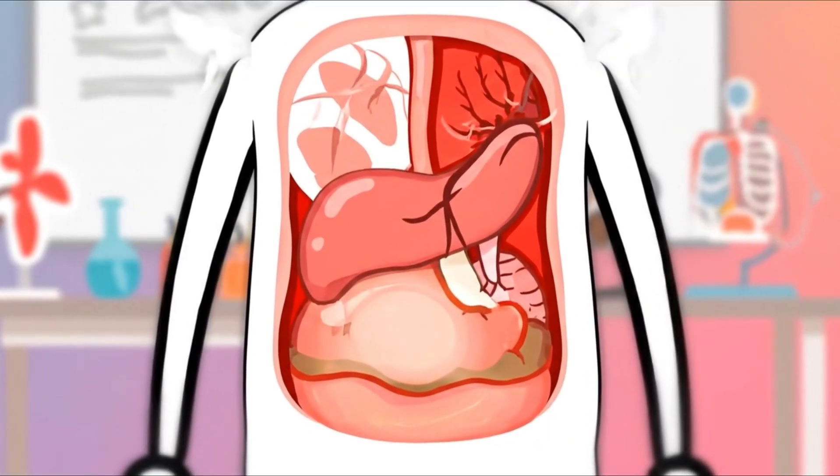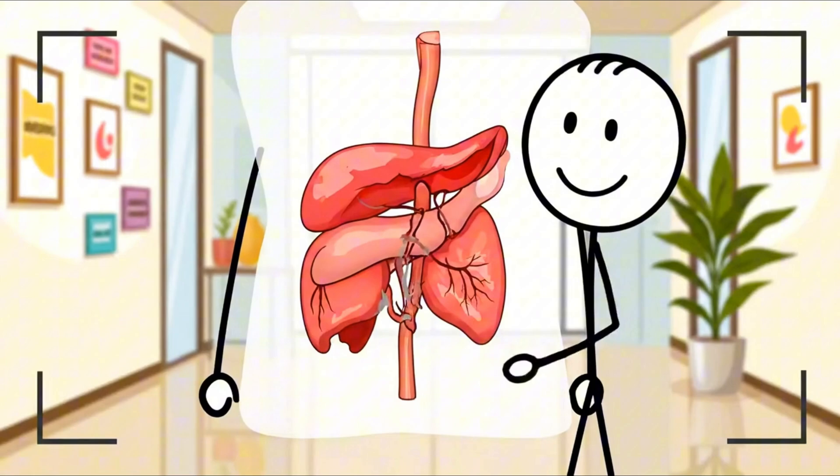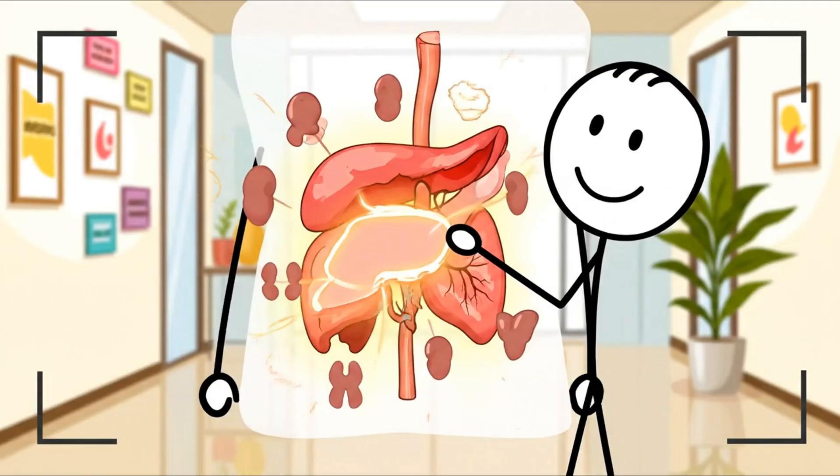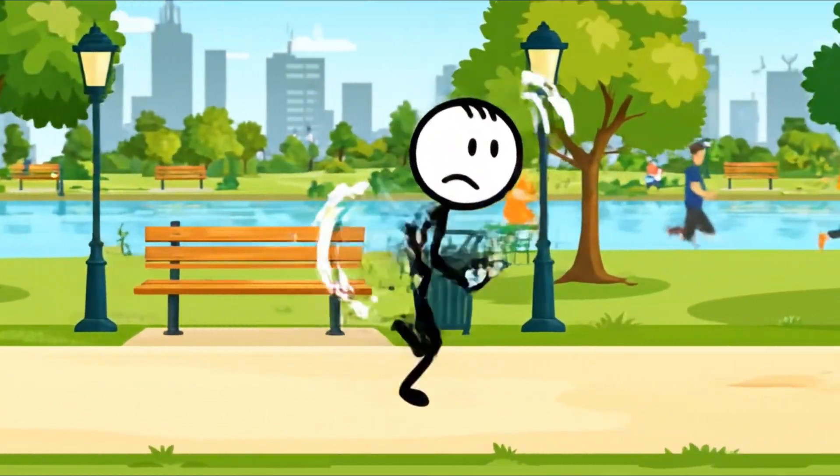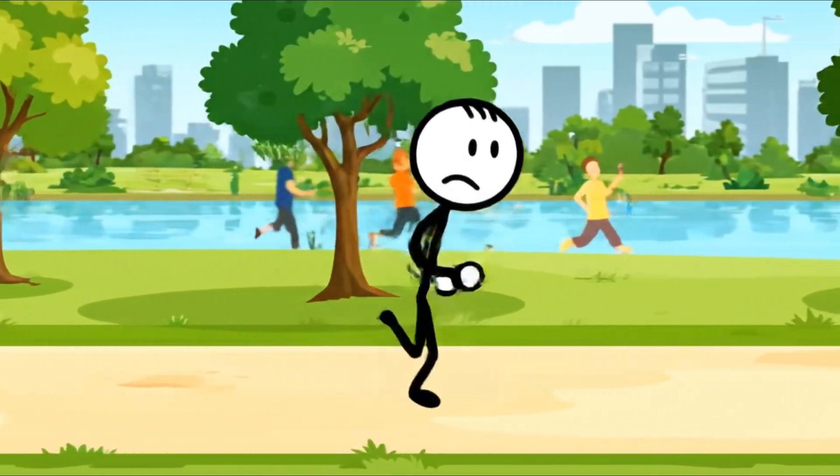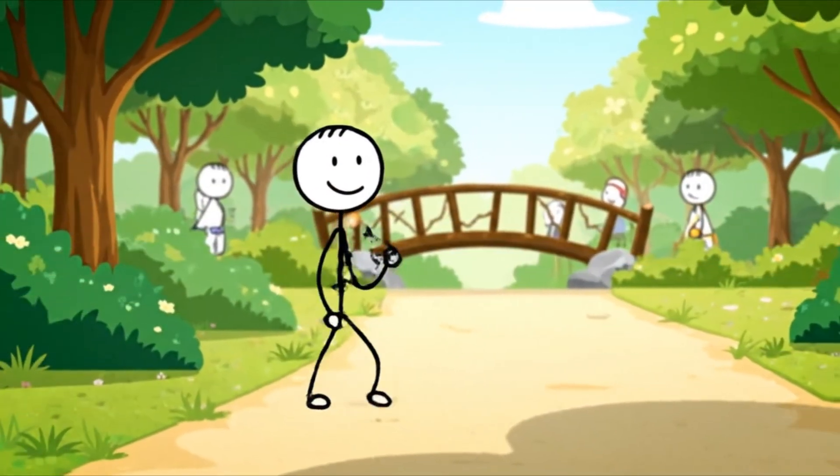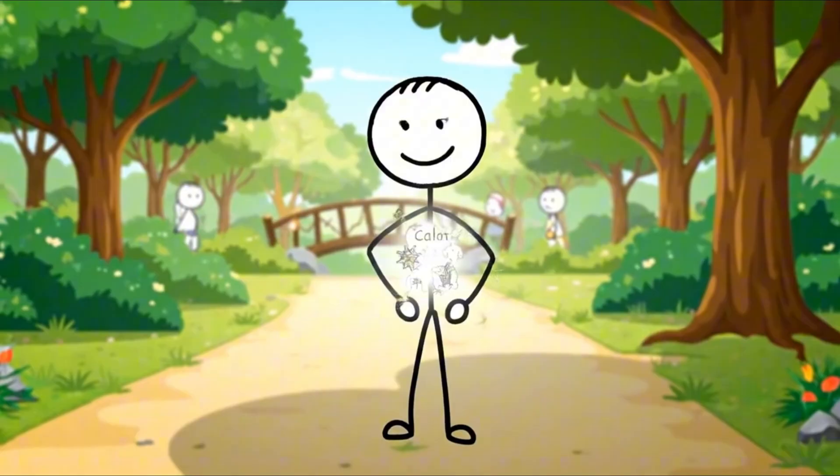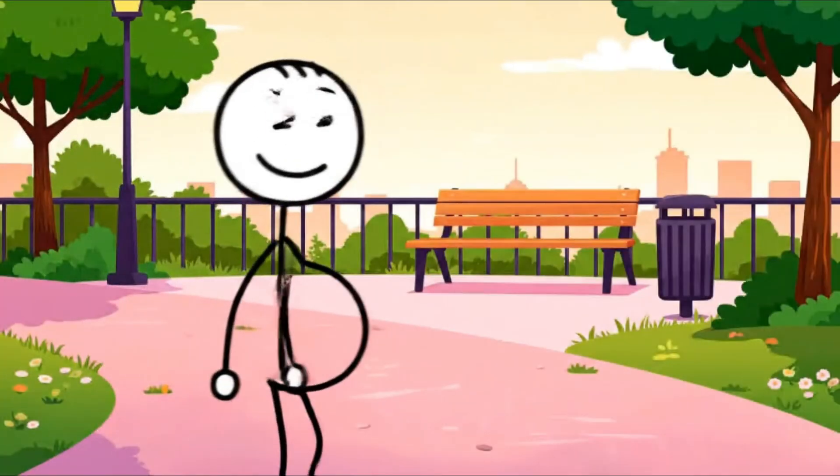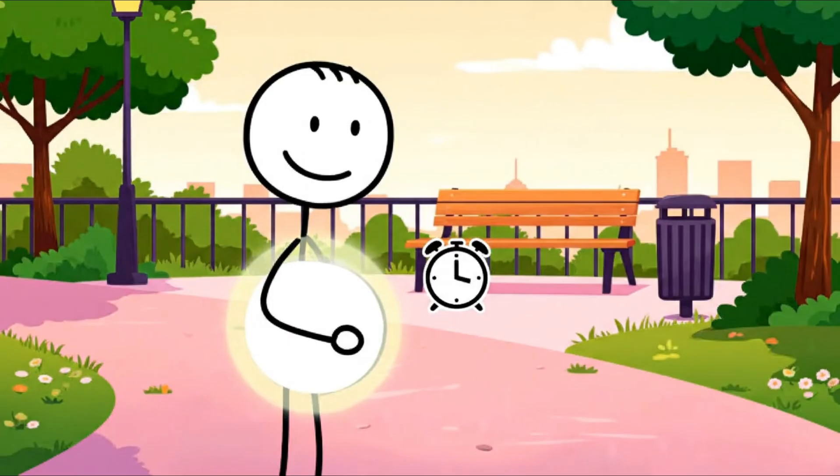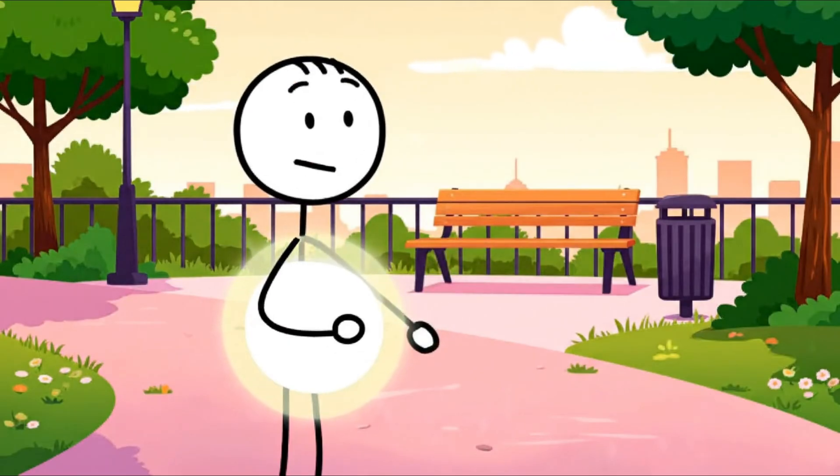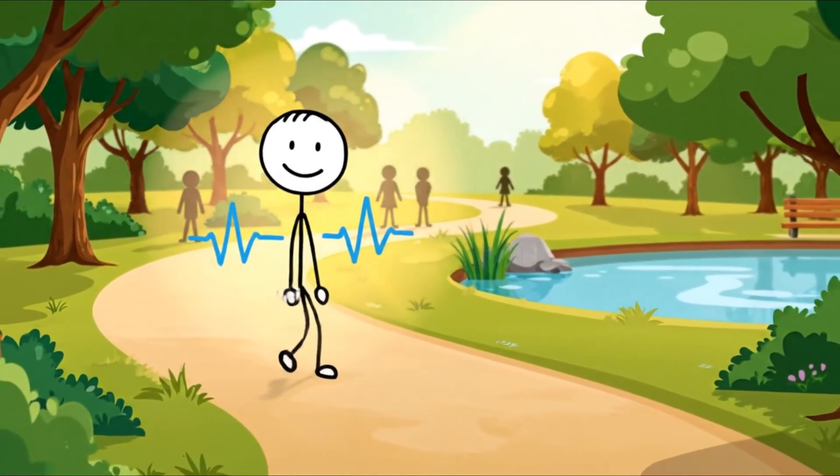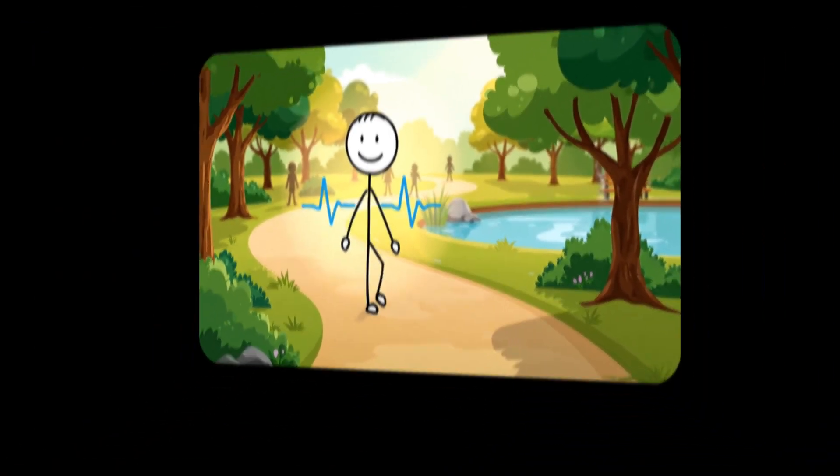One of the biggest misconceptions about walking for fat loss is the belief that speed is the deciding factor. Faster feels productive. Heavier breathing feels effective. But the body doesn't measure effort by pace. It measures it by internal load. And heart rate is the clearest external reflection of that load. When heart rate stays within a moderate range, typically around 50 to 70 percent of your maximum heart rate, your physiology begins favoring fat as a primary energy source. This zone allows oxygen delivery to match demand without triggering stress responses.